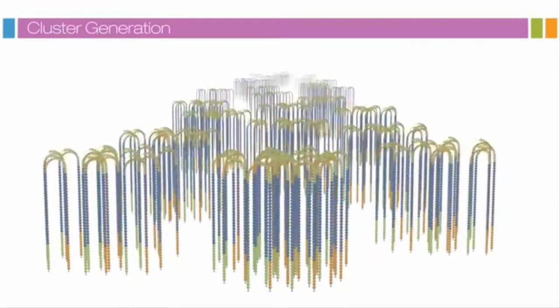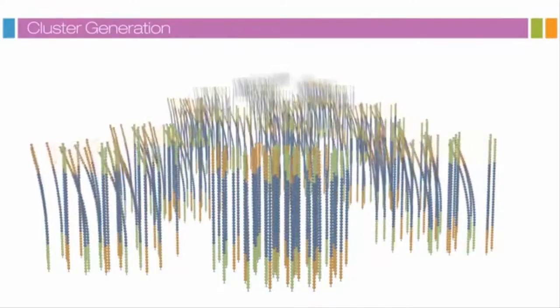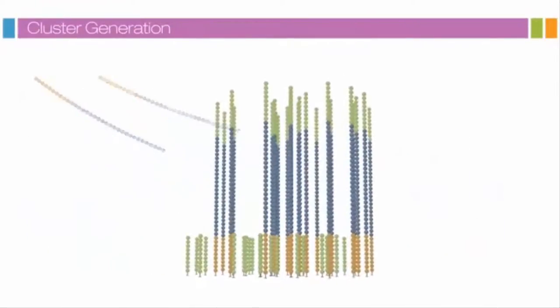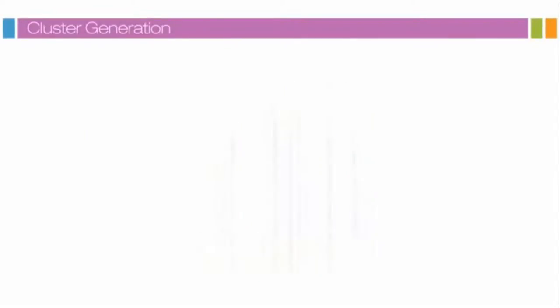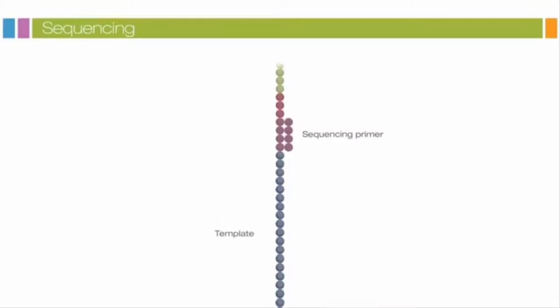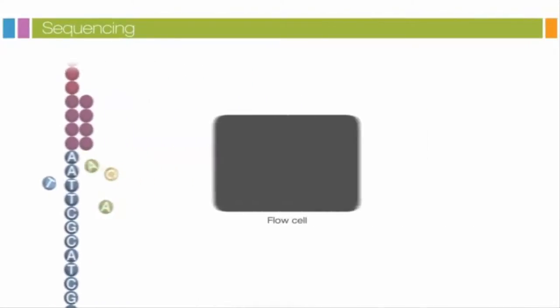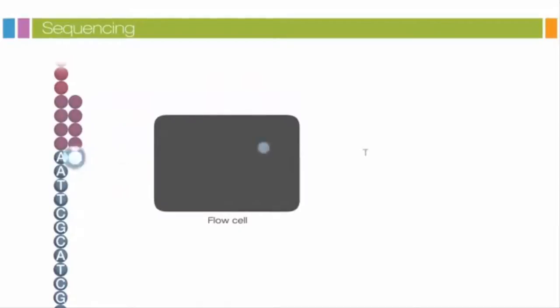After bridge amplification, the reverse strands are cleaved and washed off, leaving only the forward strands. The three prime ends are blocked to prevent unwanted priming. Sequencing begins with the extension of the first sequencing primer to produce the first read. With each cycle, fluorescently tagged nucleotides compete for addition to the growing chain.